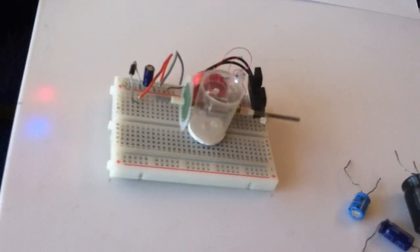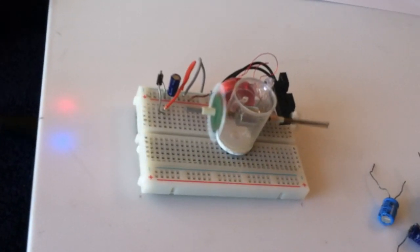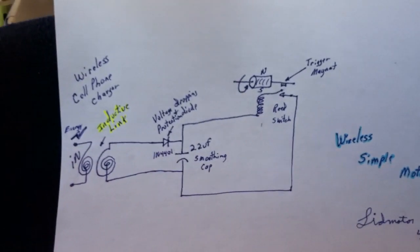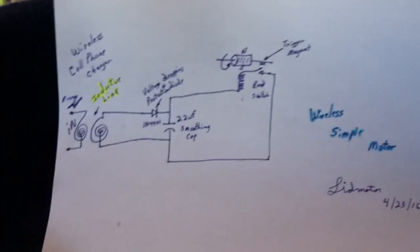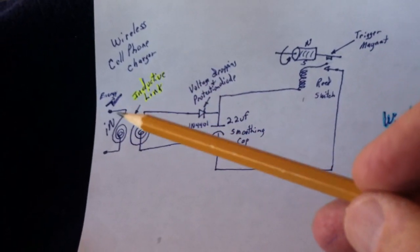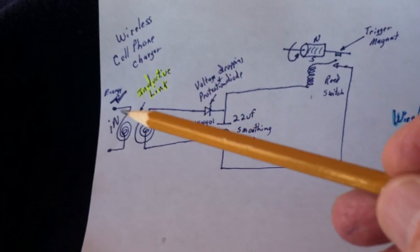But this is not a fake video. This is one way to run a pulse motor wirelessly. Here's the circuit diagram. I'm just calling this the Wireless Simple Motor. What I'm using is a cell phone charger, a wireless cell phone charger.